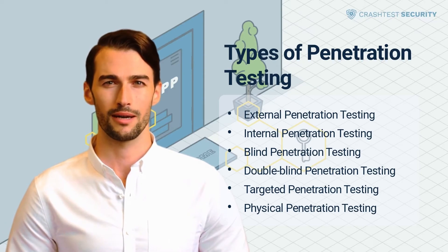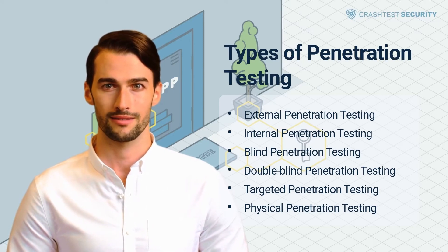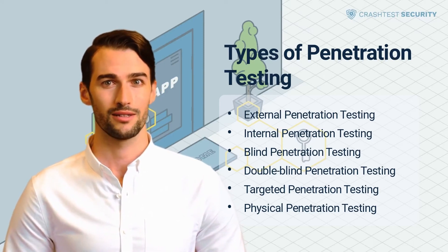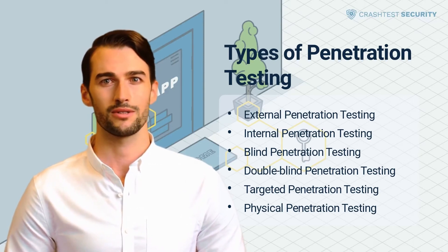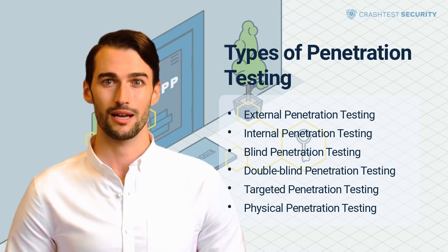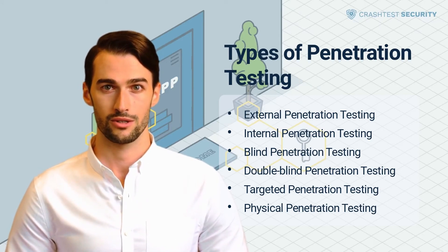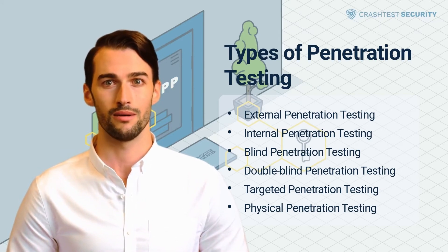Double Blind Penetration Testing: This penetration testing approach simulates an organization's preparedness for an attack, since the security team has no idea whether penetration testing has been appropriately performed. This also means that security experts have no time to strengthen their defenses before the data breach, similar to a real-life attack scenario. This type of pentesting can help test an organization's security monitoring, incident identification, and response procedures.